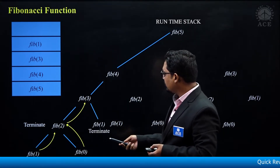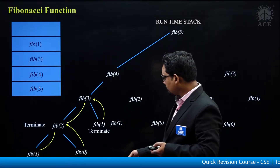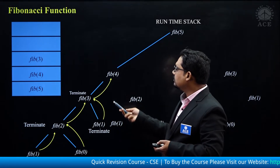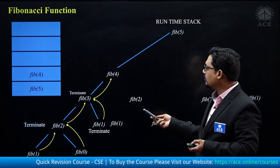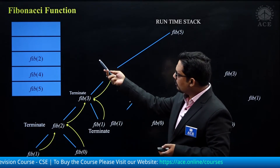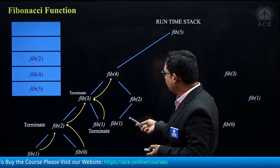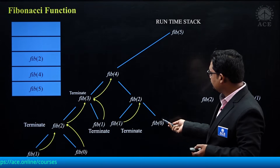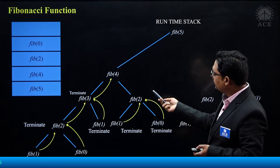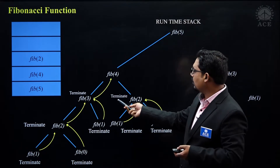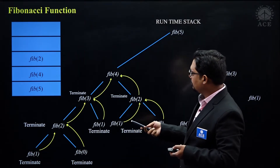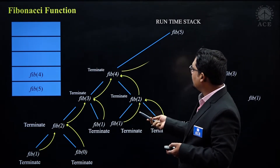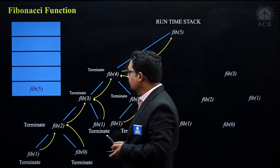Fib1 will be pushed in the activation record and finally it will terminate and come back. That will cause Fib3 to terminate, and control will return to Fib4. Now the activation of Fib2 will start and that activation record will be pushed. Fib1 terminates and comes back, Fib0 terminates and comes back. Finally Fib0 terminates, Fib2 will now terminate, and control returns to Fib4.